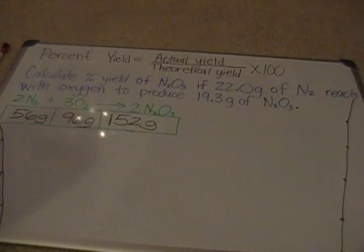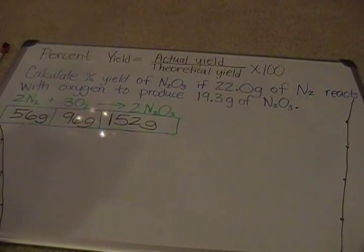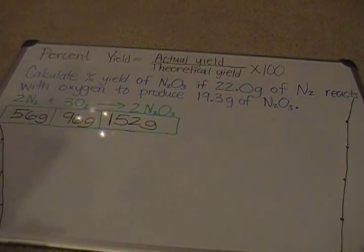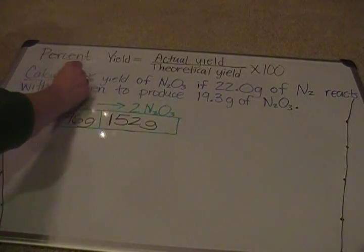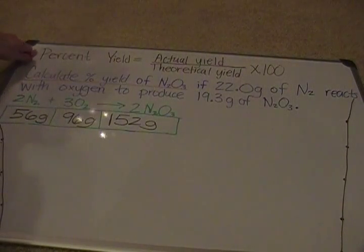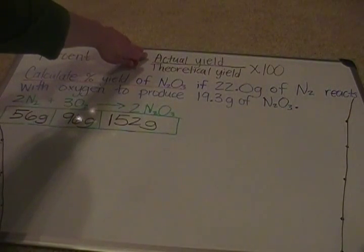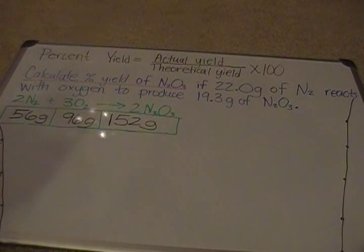Now we'll set up our problem. With every calculation we've done in class, you have to start with what you know. When reading the question, we look for two things: what am I being asked to find, and what do I already know? The question asks to calculate the percent yield of dinitrogen trioxide — that's my unknown. That means I'll need both an actual value for N2O3 and a theoretical value, and the theoretical value is the one we're going to calculate.